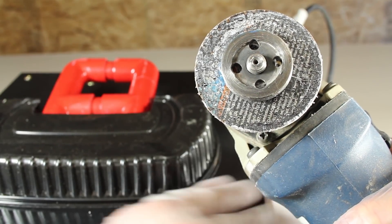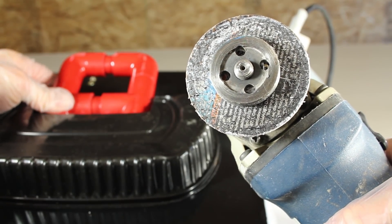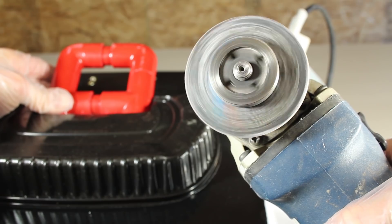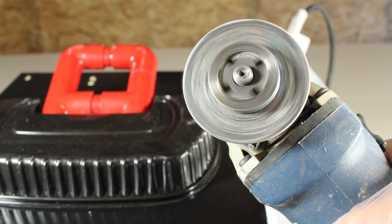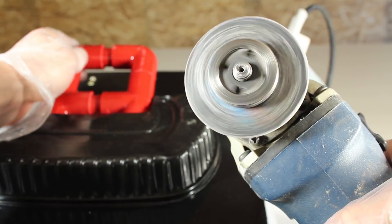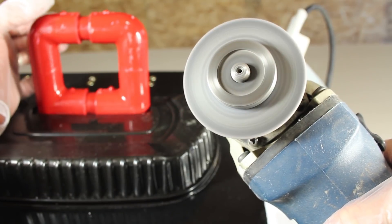The main purpose of this contraption is to regulate current to our electrical devices. Adding just a little power to an angle grinder will cause the device to spin very slowly. But pulling back on the lever will increase the power until it reaches full speed.